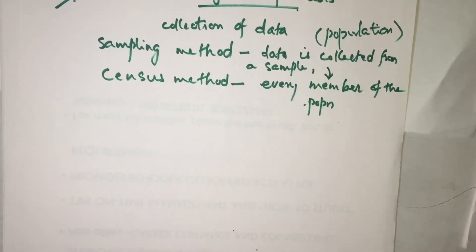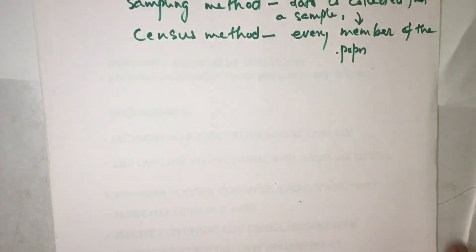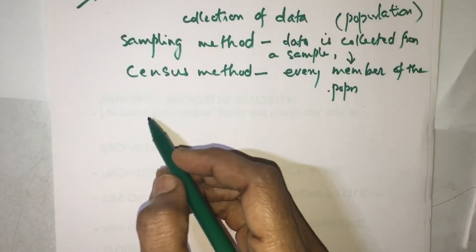For example, suppose in your class there are 60 students, then 10% of 60 is 6. So I will take data of 6 students and study that — those 6 students form the sample. Then we calculate certain things related to this sample.